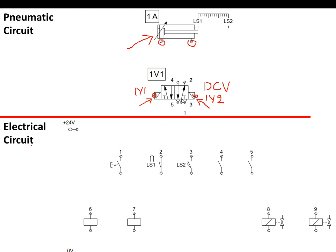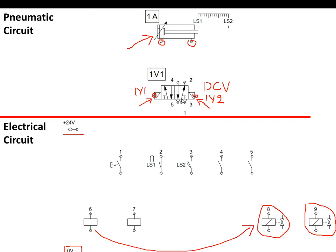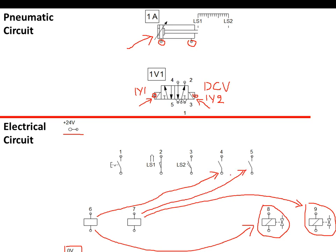For the electrical circuit, the complete solution will not be shown as this is only a briefing. We need a positive source, a ground source, and two solenoids. Each solenoid is controlled by a relay — solenoid one by relay one and solenoid two by relay two. Each relay must have its own contact — at least one — whether normally open or normally closed, depending on the solution.